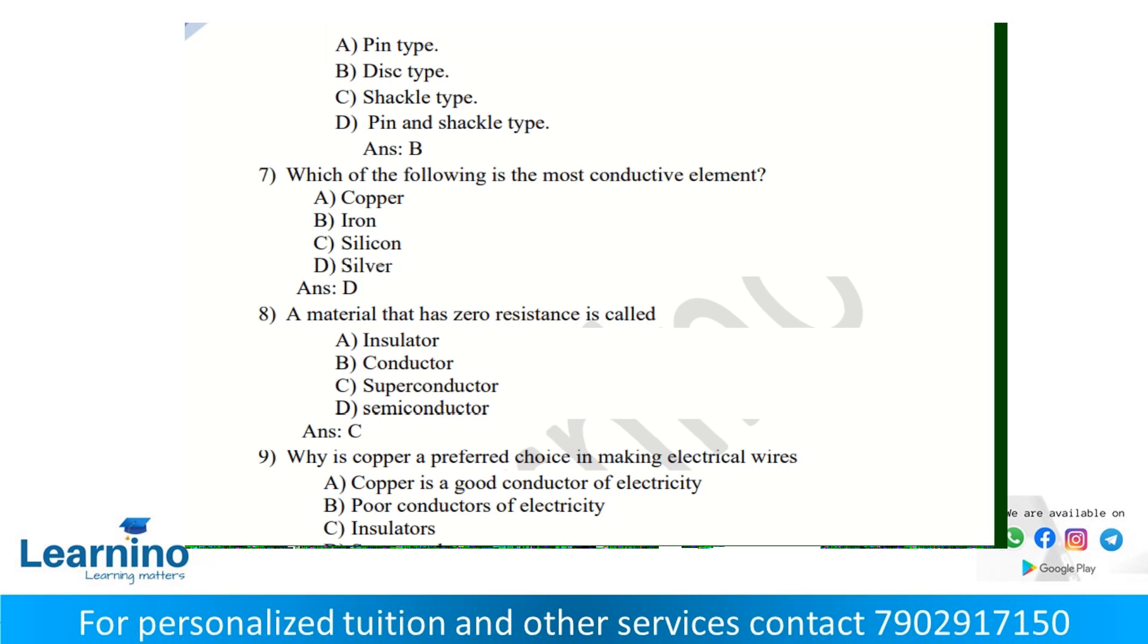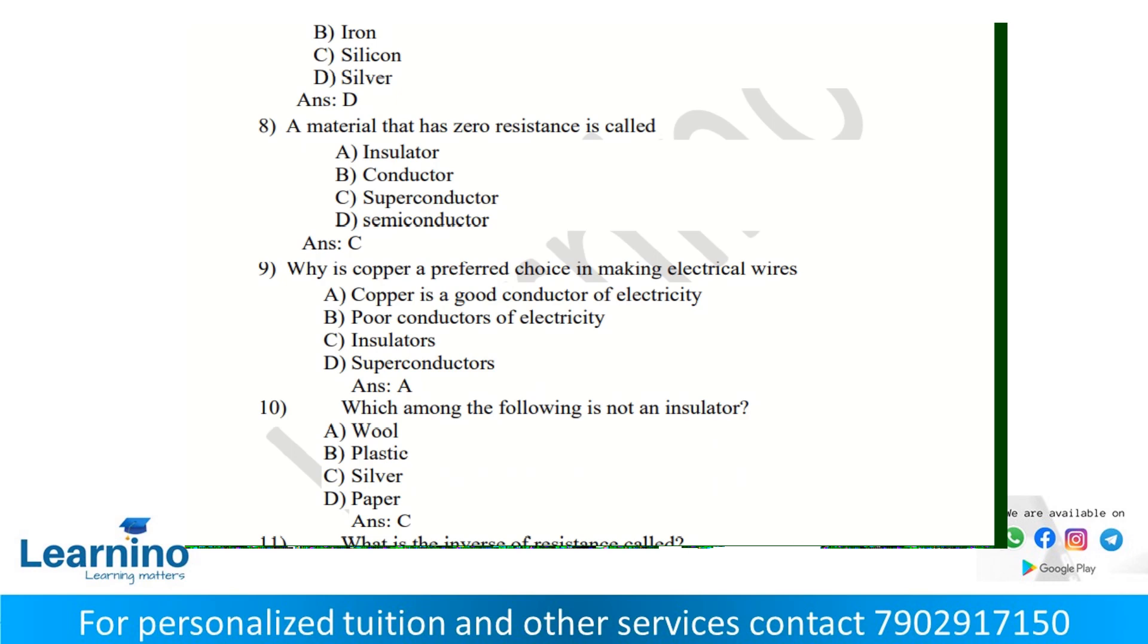A material that has zero resistance at a particular temperature called critical temperature is a superconductor. The state of matter that has no electrical resistance and does not allow magnetic field to penetrate. This property is called superconductivity.